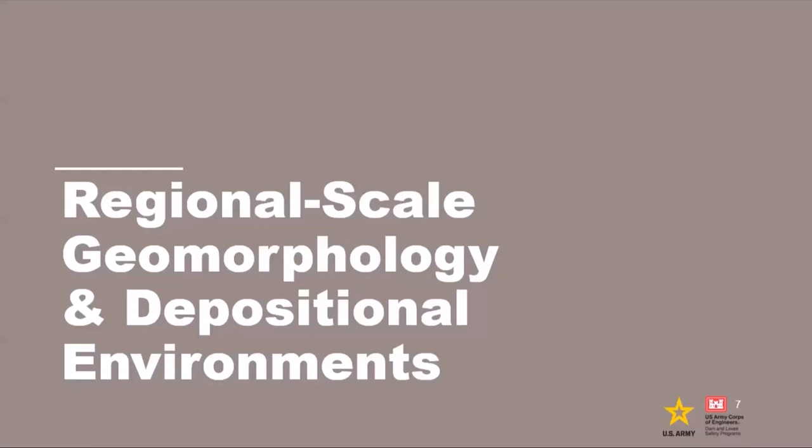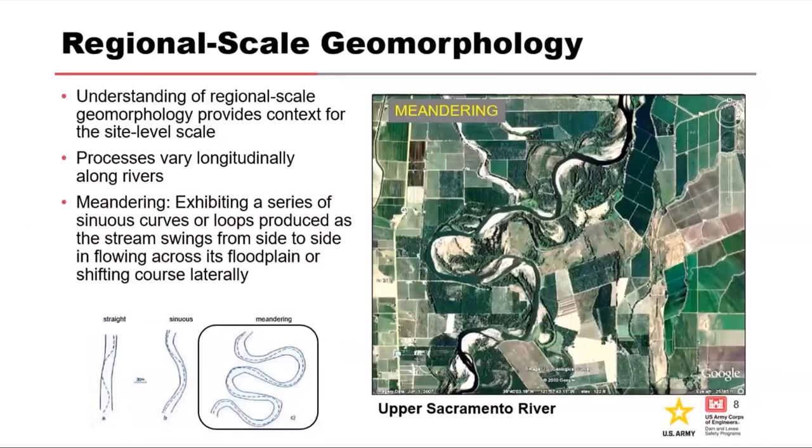One of the things we talk about a lot is depositional environments — that's the way the sediment gets deposited. It makes a difference whether you're in a fast-moving, high-energy environment or a slow-moving, slack-water, low-energy environment. You'll get different types of deposits based on those basic principles.